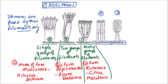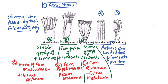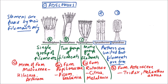The second category is the synantherus type of cohesion of stamens. In this category, anthers are united but filaments are free. Examples include family Asteraceae, with members such as Tridax, and Helianthus annuus, that is sunflower.